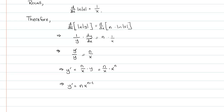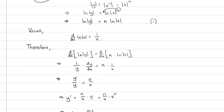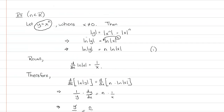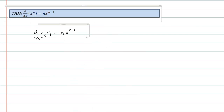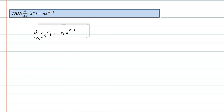The only assumption I made here is that x is nonzero. However, if x were zero, you're taking the derivative of zero — that's just zero itself. So that's a trivial example and the result still holds.